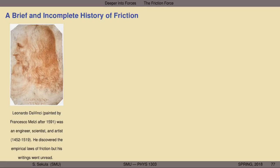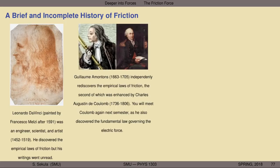Da Vinci is perhaps one of the first people who discovered them and wrote them down in a rigorous way. Most of the credit in modern writing about friction goes to Guillaume Amonton, who lived from 1663 to 1705 — a little more than a century after Da Vinci — who independently rediscovered the empirical laws of friction. The second of those laws was enhanced by the work of another scientist, Charles Augustin de Coulomb, who lived from 1736 to 1806. Coulomb is a name you'll come to know quickly in the second semester of introductory physics when you study electricity and magnetism, as one of the fundamental laws governing electricity and magnetism bears his name.